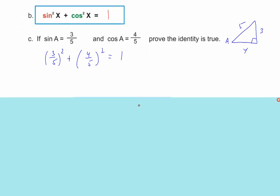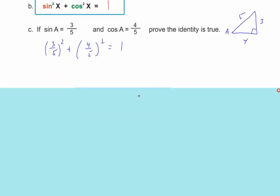If the identity is true, then the value of sine of A — which can be in decimal form or fractional form — must satisfy it. So 3 fifths squared is 9 twenty-fifths, and 4 fifths squared is 16 twenty-fifths. 9 plus 16 is 25, and 25 twenty-fifths is indeed 1. The identity is true.